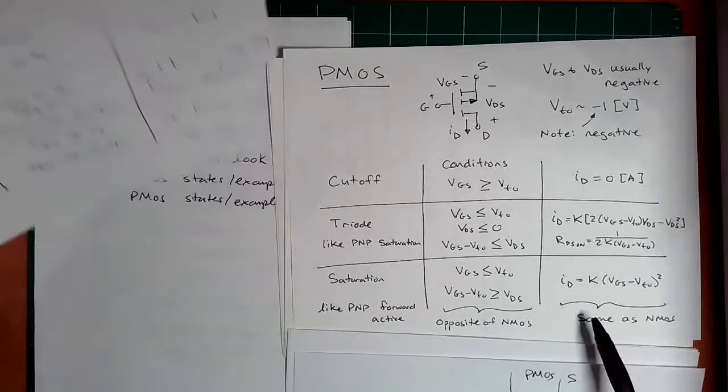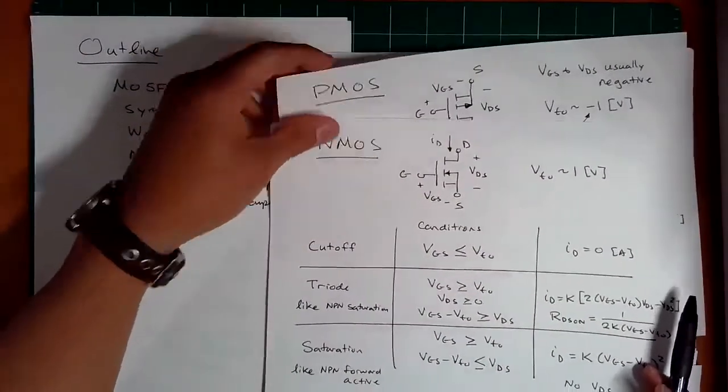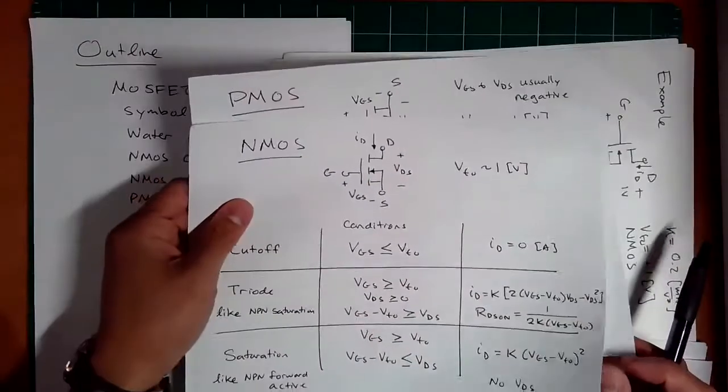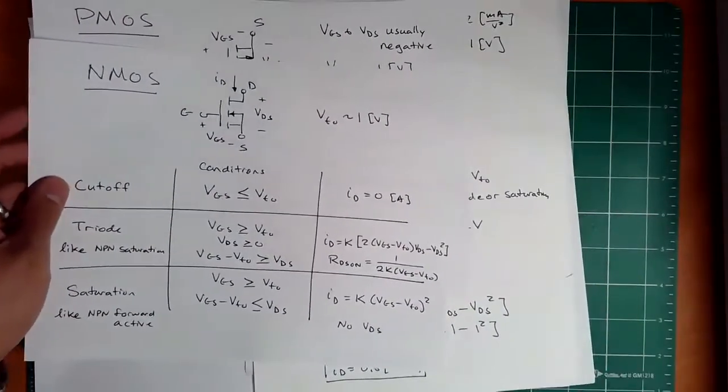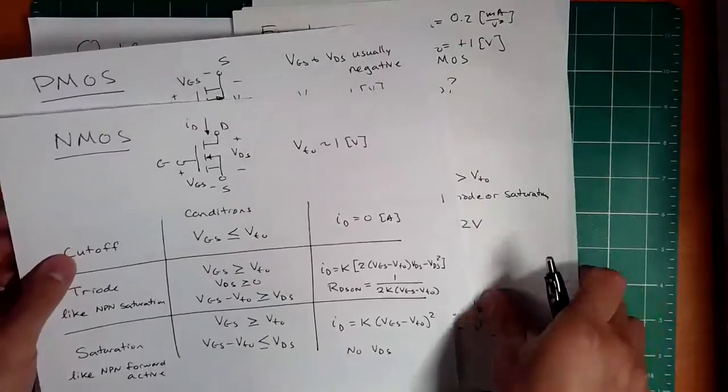And it makes it easy to kind of do some back of the envelope calculations. So let's use these charts and run through a few examples. And this will hit home, hopefully, how to use these equations and calculate currents in your MOSFET.